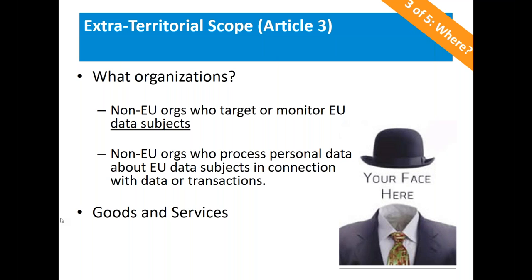The data subject does not actually have to offer payment for a good or service for you to be considered within GDPR — you simply need to be offering it. On processing scope, one of the key changes in GDPR is that data processors now have direct obligations for the first time. As an accountability-based privacy law, these obligations include: maintaining a written record of processing activities, designating a data protection officer, appointing a representative if you are not in the EU, and providing notifications in the case of a data breach without delay.